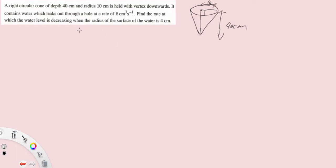It contains water which leaks out through a hole at a rate of 8 cm³ per second. So what I do is when I see 8 cm³ per second I immediately write down dv/dt in between the lines of the question. This is going to annotate your questions especially when it comes to very long type questions especially in your calculus.